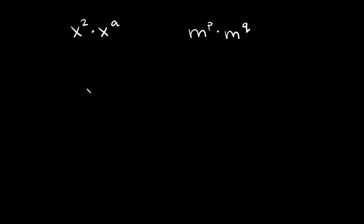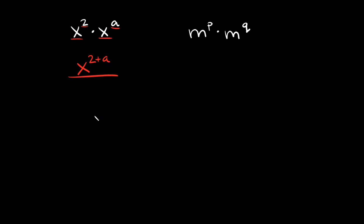The last type of example is when you have variables in your exponent. Starting with x squared times x to the a — the process is still the same. You have an x and an x, so keep the x and add the exponents. Here we have 2 plus a — there's no way to combine these further, so your simplified answer would be x to the two plus a.